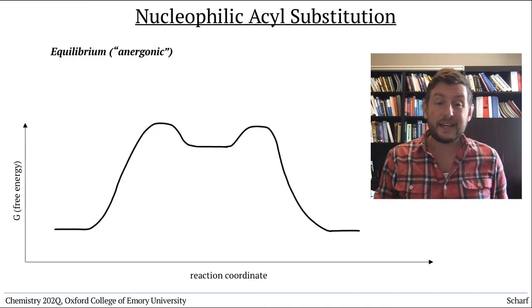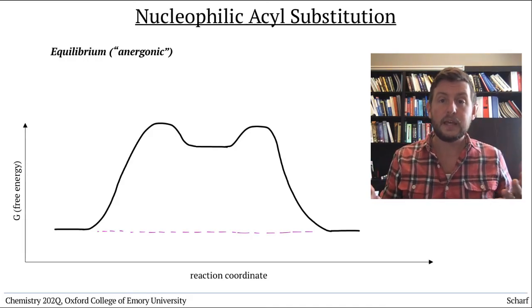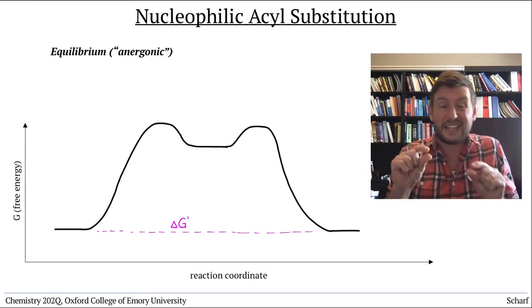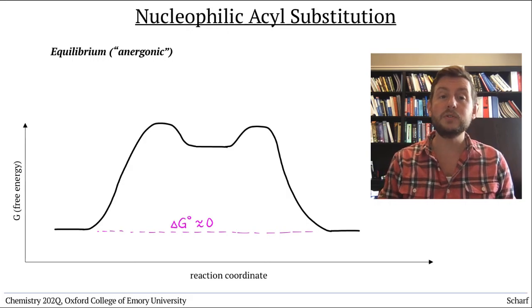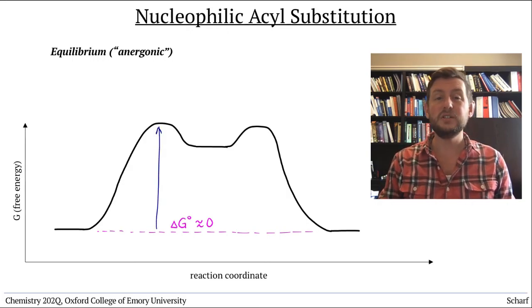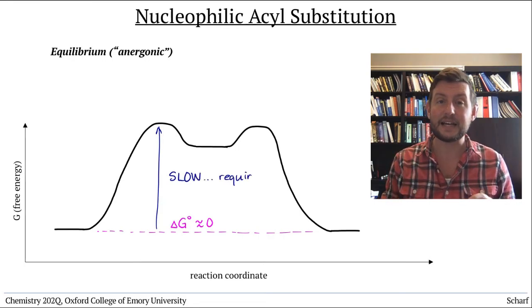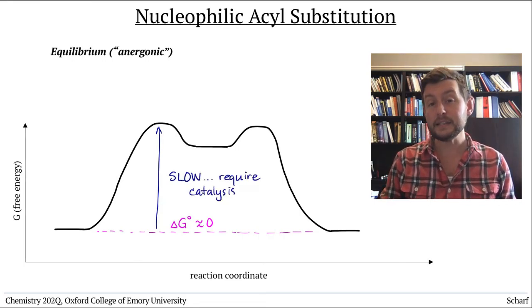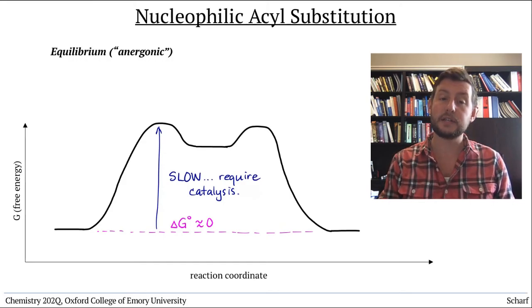Other nucleophilic acyl substitution reactions are somewhere in the middle. They may have delta G that's only slightly negative or near zero. These sorts of reactions may proceed forward, but they usually do so quite slowly, unless they are catalyzed. Catalysis by acid or base can speed these sorts of reactions up, and such catalysis is the subject of the following videos.